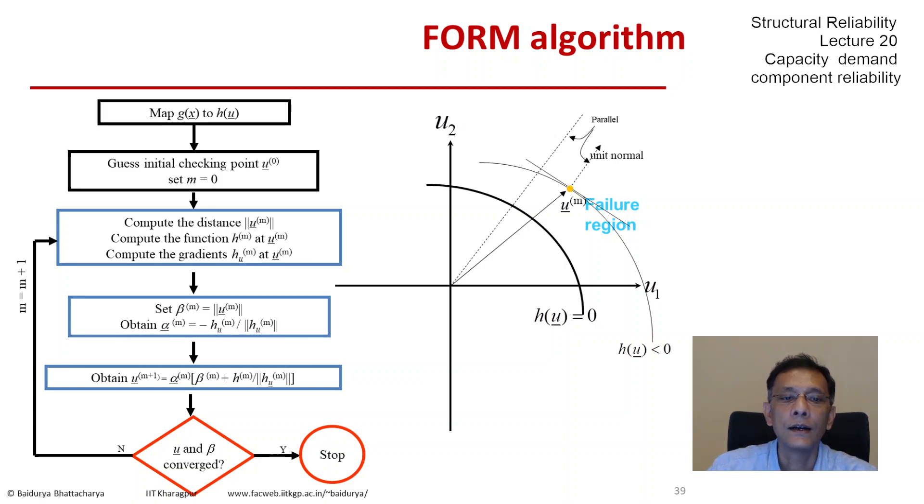Then what we do is make a correction—that would be the last step on the flowchart on the left—and project it on that direction alpha_m. That would get us our new point u of m plus one. We keep doing this until we finally reach the optimal point which does not require any further correction. That is our u star, and that distance is beta.